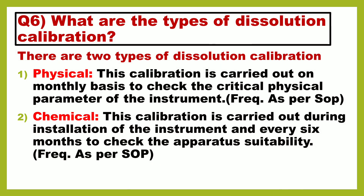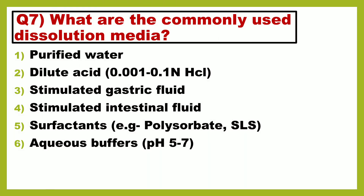Next question is: what are the types of dissolution calibration? There are two types of dissolution calibration. Number 1 is physical calibration — this calibration is carried out on a monthly basis to check the critical physical parameters of the instrument, or as mentioned on the SOP. Number 2 is chemical calibration — this calibration is carried out during installation of the instrument and every 6 months to check the apparatus suitability, or as mentioned on the SOP.